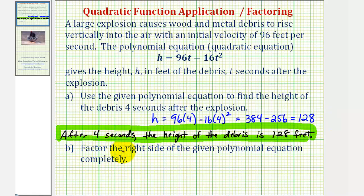We want to factor the right side of the given polynomial equation completely. So starting with the equation h equals 96t minus 16t squared, we want to factor the right side completely.